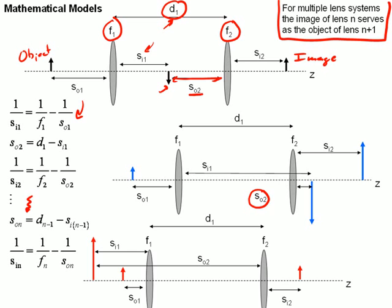For example, if we bring this in closer beyond the focal length F1, now we have a virtual image out here. In this case, the math still works out because SI1 is a negative number, and D1 minus a negative number is the same as this distance D1 plus SI1 right here.